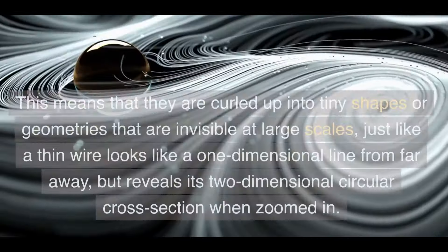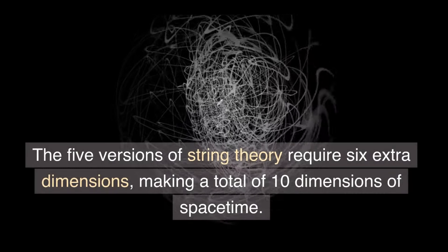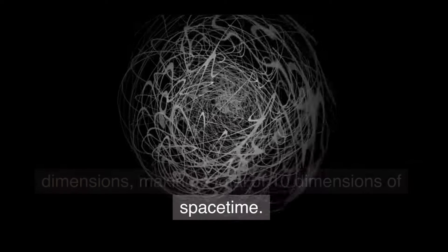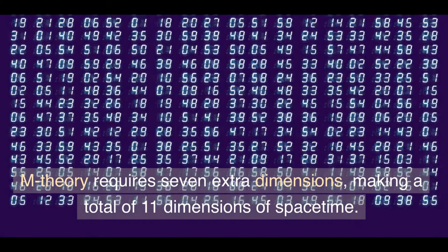This means that they are curled up into tiny shapes or geometries that are invisible at large scales, just like a thin wire looks like a one-dimensional line from far away, but reveals its two-dimensional circular cross-section when zoomed in. The number of extra dimensions depends on which version of string theory we are considering. The five versions of string theory require six extra dimensions, making a total of 10 dimensions of space-time. M-theory requires seven extra dimensions, making a total of 11 dimensions of space-time.